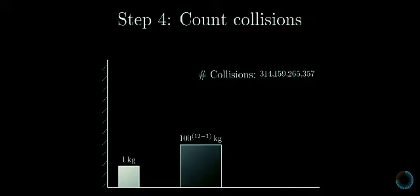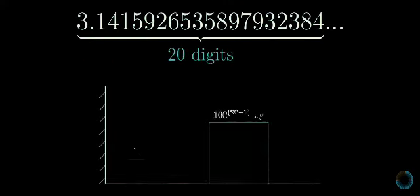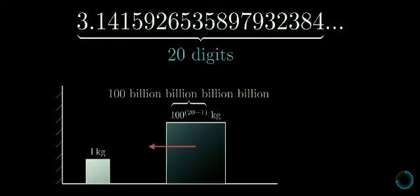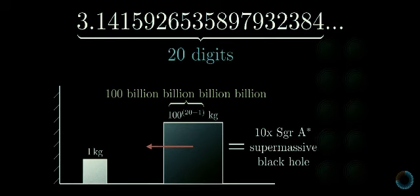So for example, to calculate only 20 digits of pi, which fits so cleanly on this screen, one block would have to have 100 billion billion billion billion times the mass of the other, which if that small block was one kilogram, means the big one has a mass about 10 times that of the supermassive black hole at the center of the Milky Way.